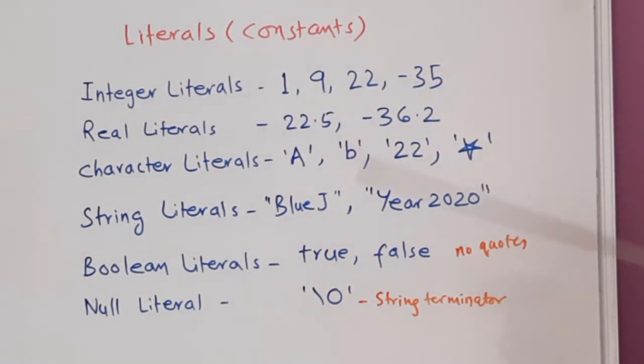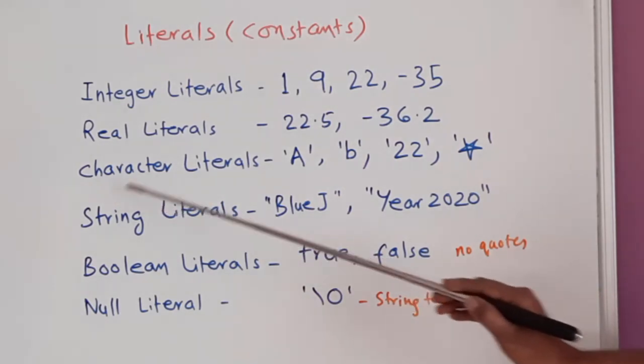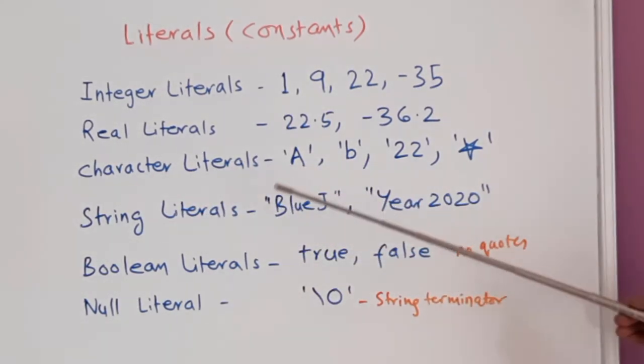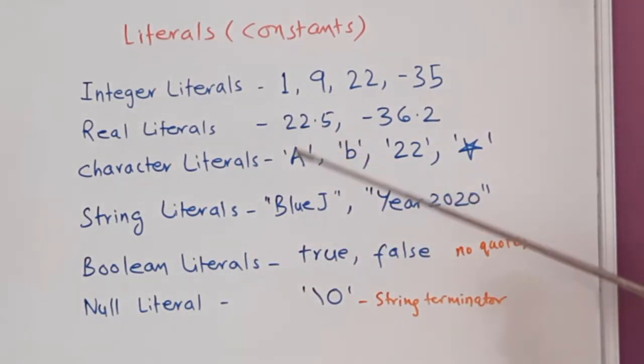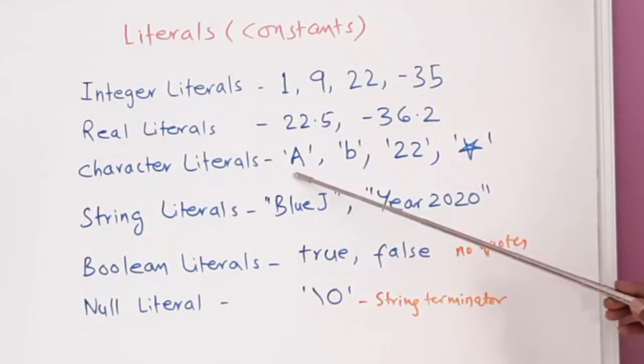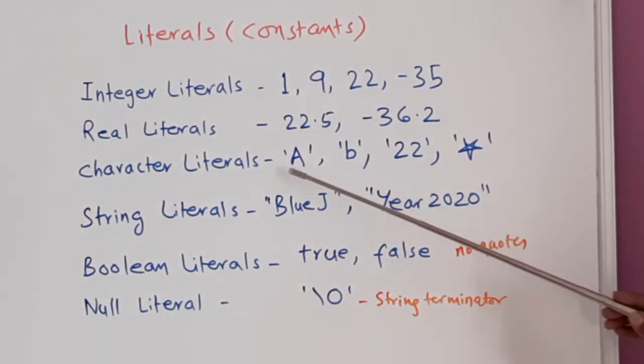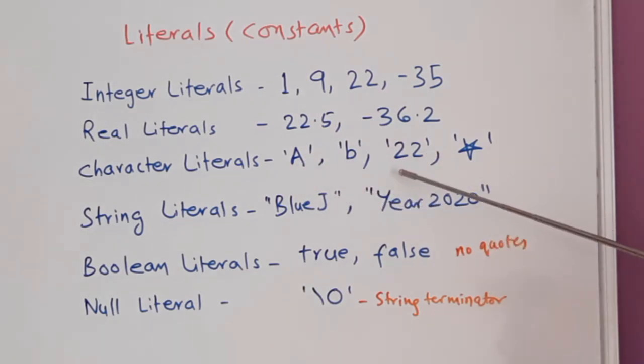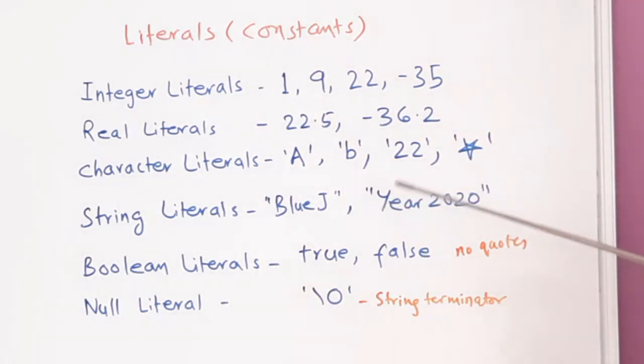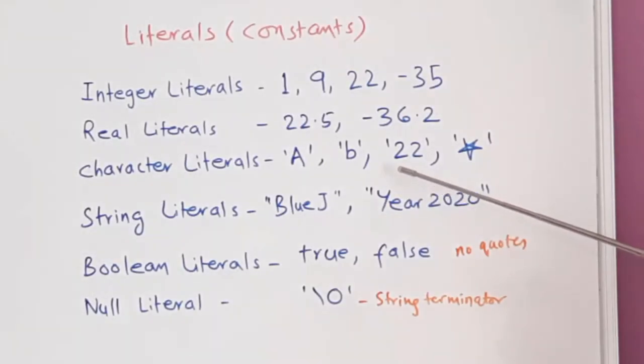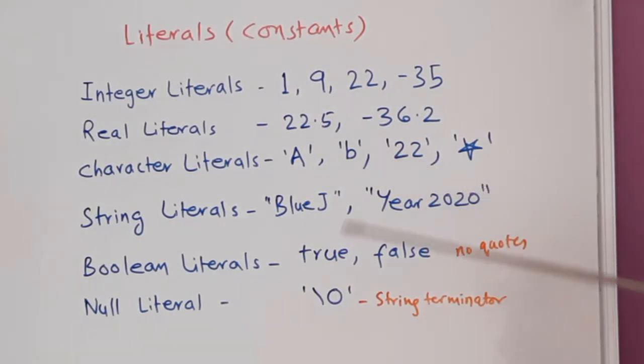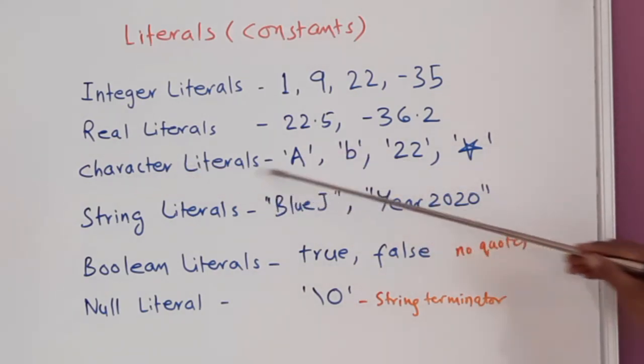Character literals are written in single quotes. For example, single quote A, single quote B. You can use capital letters, small letters. Also you can use numbers. Even if you write a number inside single quotes, that becomes a character literal. It is not treated as a number, but it is treated as a character literal. And you can also print special symbols if you use single quotes. So these are all called character literals.